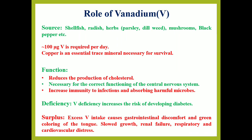Vanadium is also a transition metal from the 3D series and should be present at almost 100 micrograms in our body. Its major sources are radish, herbs, parsley, mushroom, black pepper, etc. It reduces the production of cholesterol, increases immunity towards infections, and helps absorb harmful microbes. Vanadium is required for correct functioning of the central nervous system. If it is deficient, it increases the risk for diabetes. If excess vanadium is present, there is gastrointestinal discomfort, renal failure, and respiratory and cardiovascular distress.